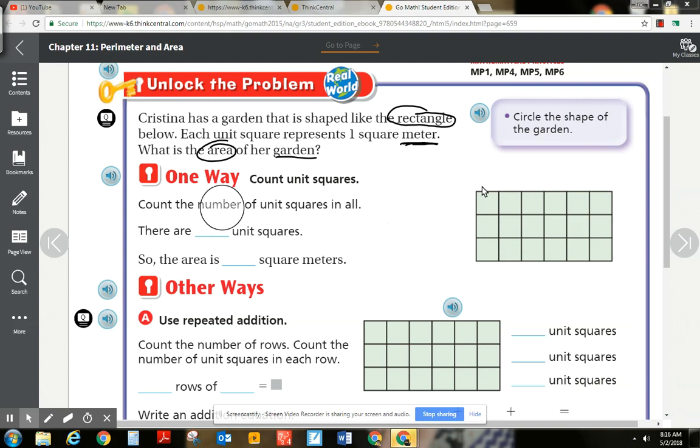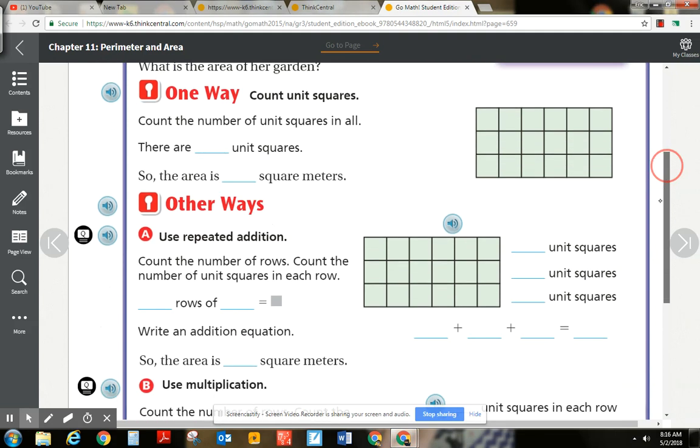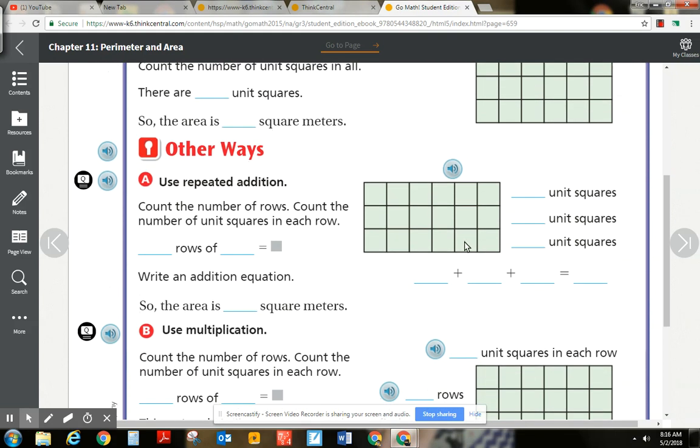So let's take a look at some other ways, especially the multiplying way. The multiplying method is really the most efficient, and we'll connect it to addition also. So you can use repeated addition. We're going to count the number of rows. Rows are up to the side. So there's 1, 2, 3 rows. Three rows of blanks.